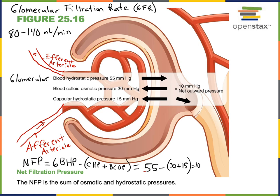Dilation of the efferent arteriole decreases the resistance to blood flowing out, while constriction of the afferent arteriole increases resistance to blood flowing in. Therefore, constriction of the afferent arteriole and dilation of the efferent arteriole will lead to a decrease in the glomerular blood hydrostatic pressure. This is the primary way we regulate the glomerular filtration rate — by constricting or dilating the afferent and efferent arterioles to regulate the glomerular blood hydrostatic pressure.